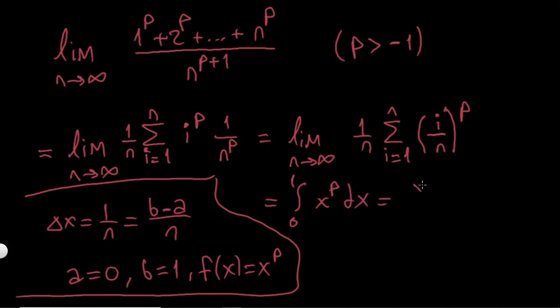By the power rule, it's gonna be X to the P plus 1 over P plus 1, evaluated from 1 to 0. So it's just gonna be 1 over P plus 1, and when I put X equals 0 it's 0, so this is our answer. Also, a quick note...